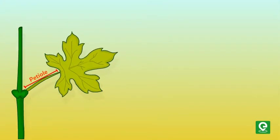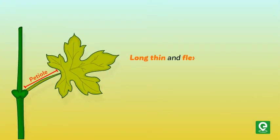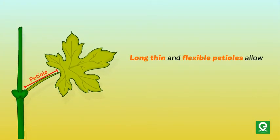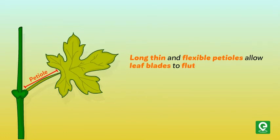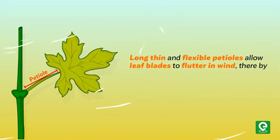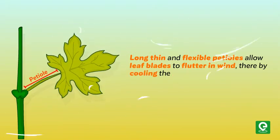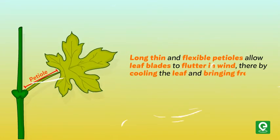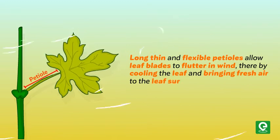The petiole helps to hold the blade. Long, thin, and flexible petioles allow leaf blades to flutter in the wind, thereby cooling the leaf and bringing fresh air to the leaf surface.